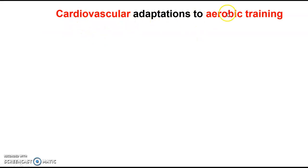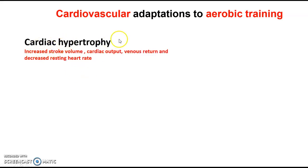Cardiovascular adaptations look at anything to do with the heart, the heart muscle, or the vascular system — the vessels and the blood. If we subject the body to aerobic training such as HIIT or continuous training, we have cardiac hypertrophy — increasing the size of the heart muscle. As a result, it increases the pumping capacity, which increases stroke volume, cardiac output, and venous return, and then decreases resting heart rate because it doesn't need to pump as many times to get blood out per beat.